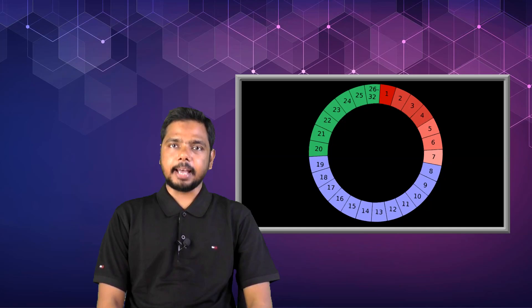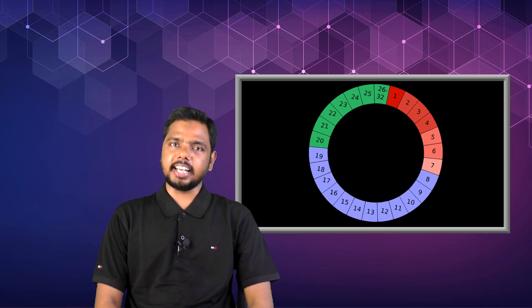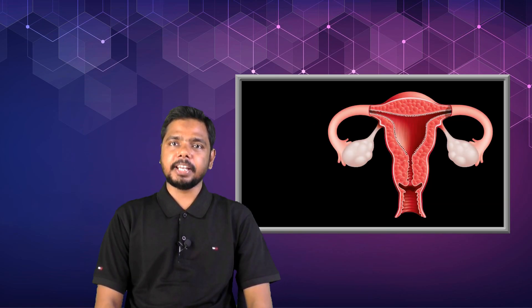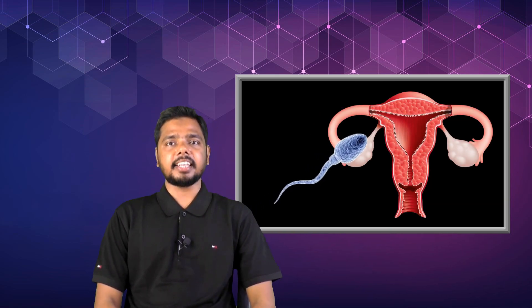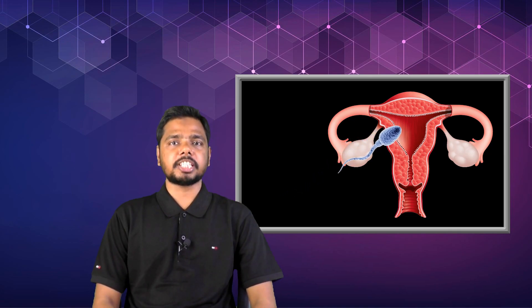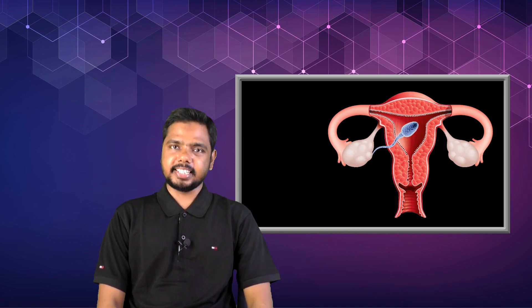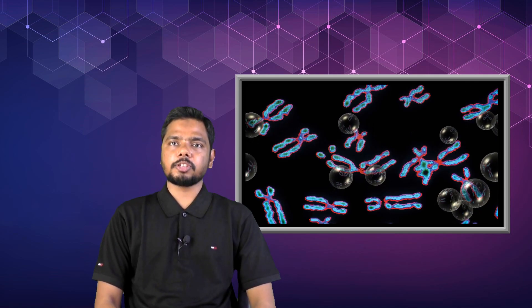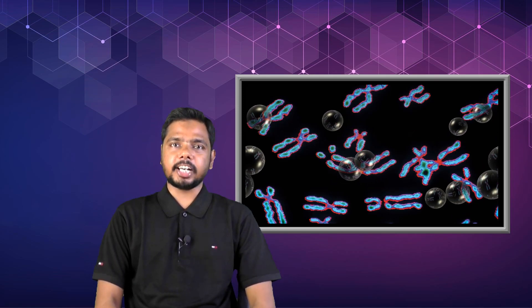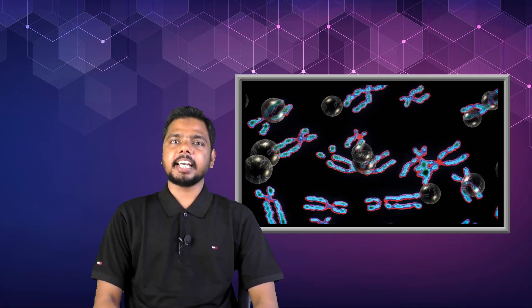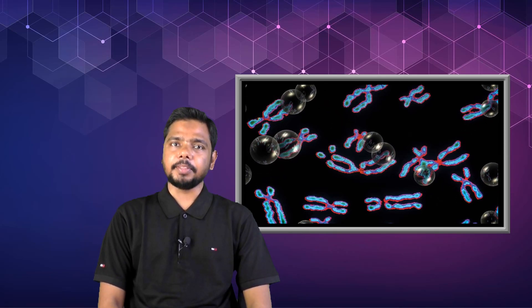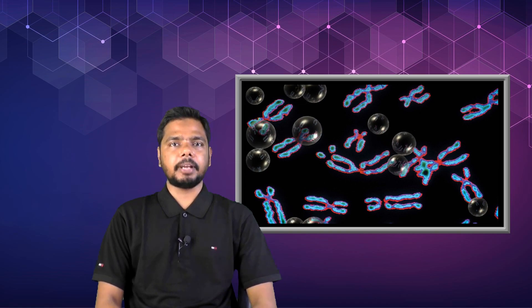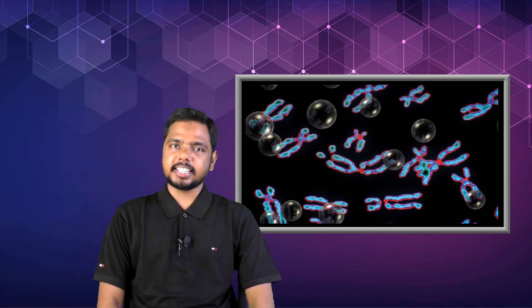A molar pregnancy happens due to an irregular fertilized egg. Human cells generally include 23 pairs of chromosomes. A single chromosome in every pair comes from the father and the other comes from the mother. If an empty egg is fertilized by one or two sperm, it makes a molar pregnancy. If the mother's chromosomes are absent but the father provides two sets of chromosomes, it can make a partial molar pregnancy. Most frequently this problem happens when two sperm fertilize an egg.